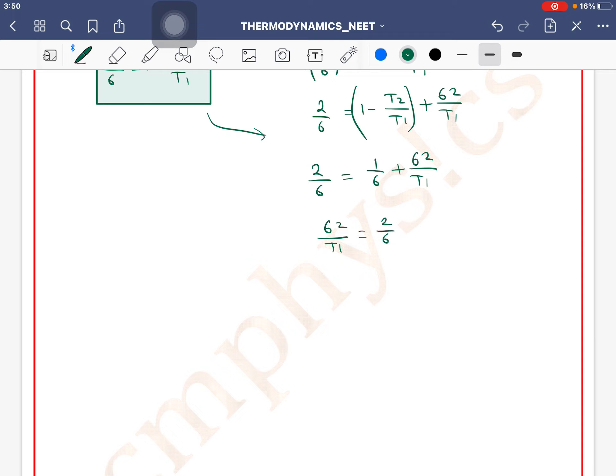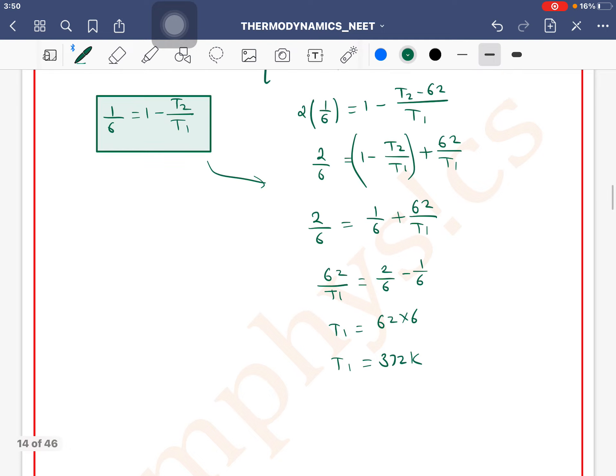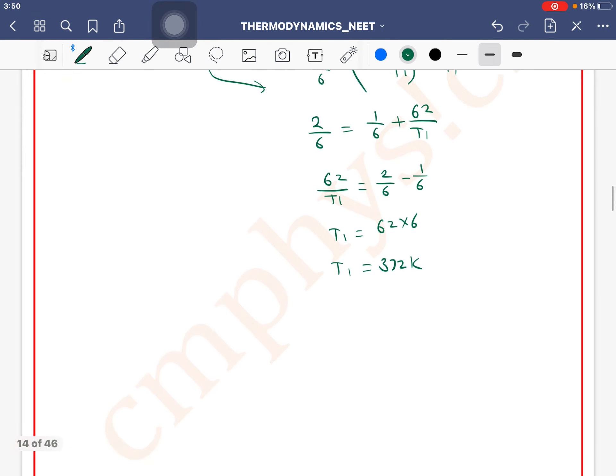Therefore 62/T1 = 2/6 - 1/6. So T1 is equal to 62 × 6, which equals 372 Kelvin.